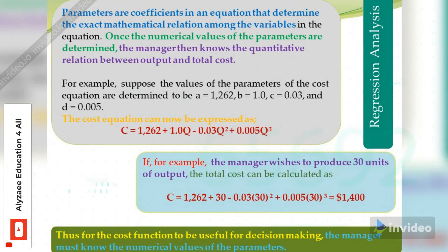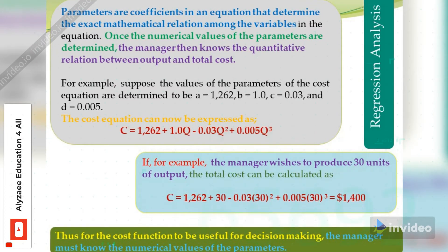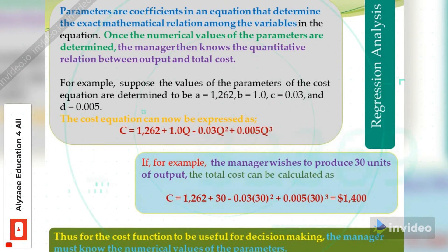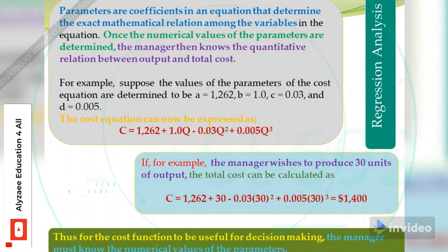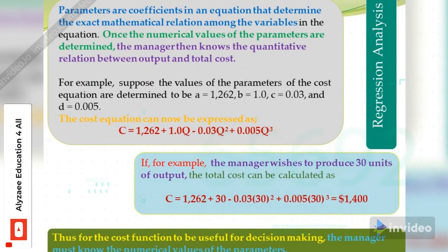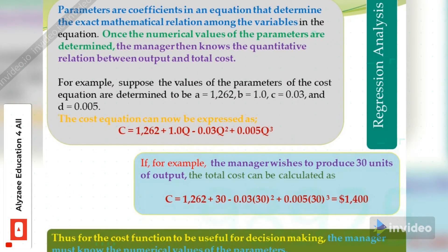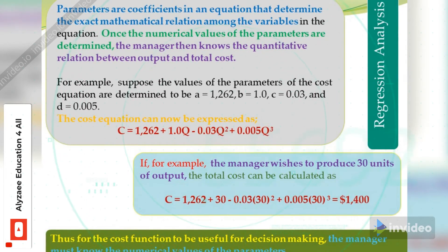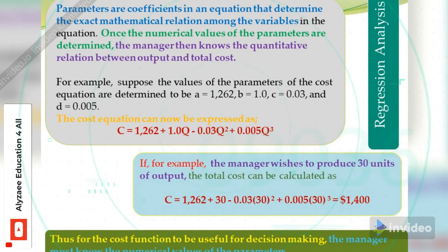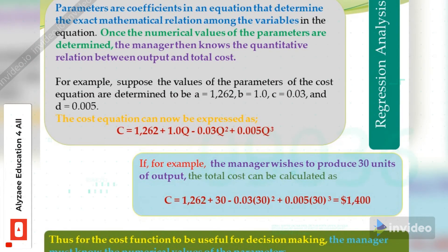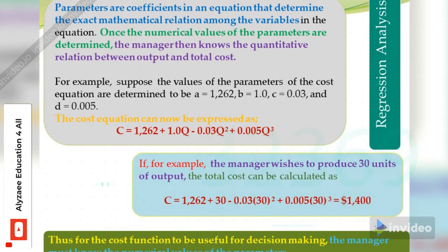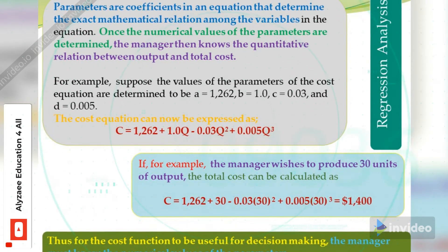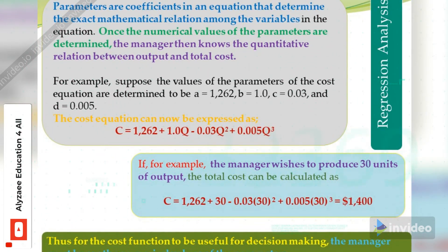For example, suppose the values of the parameters are determined to be a = 1262, b = 1.0, c = -0.03, and d = 0.005. The cost equation can now be expressed as: C = 1262 + 1.0Q - 0.03Q² + 0.005Q³. If the manager wishes to produce 30 units of output, the total cost can be calculated as: C = 1262 + 30 - 0.03(30)² + 0.005(30)³ = $1,400.